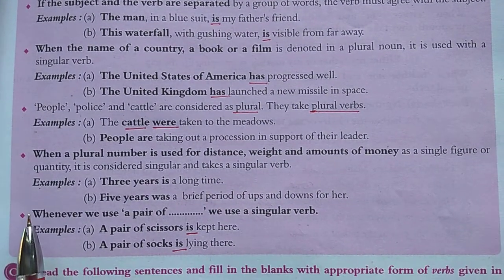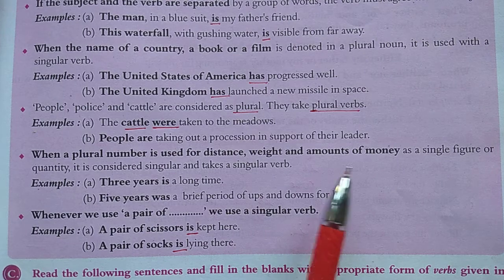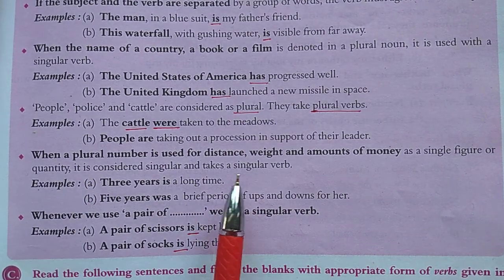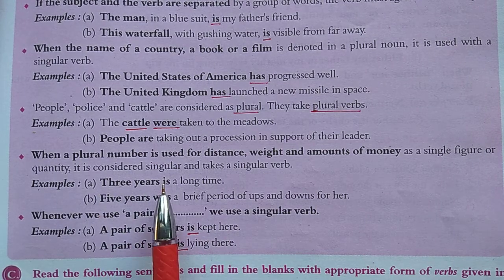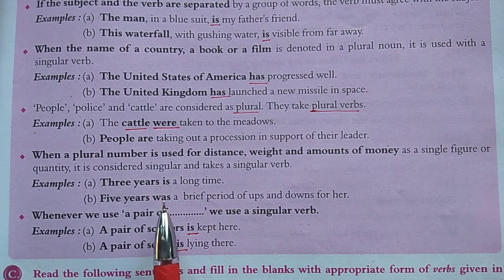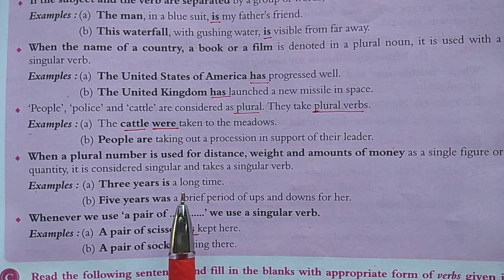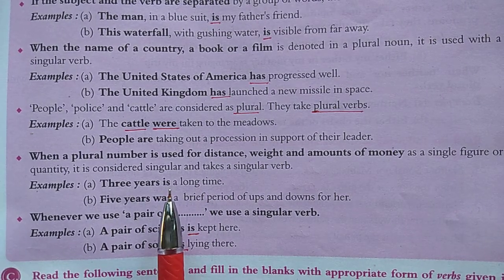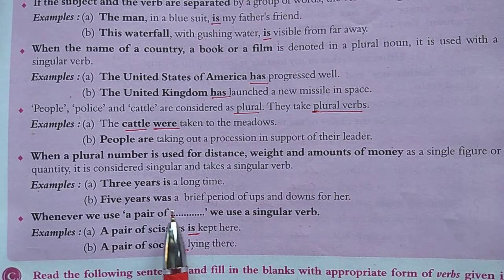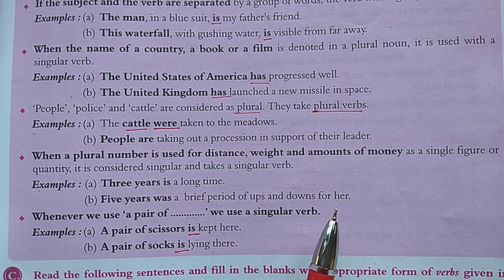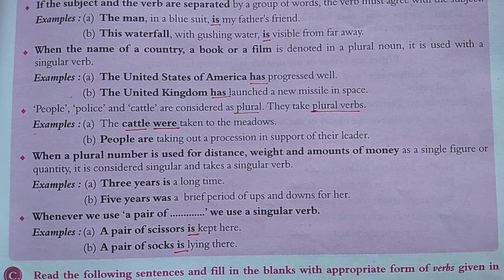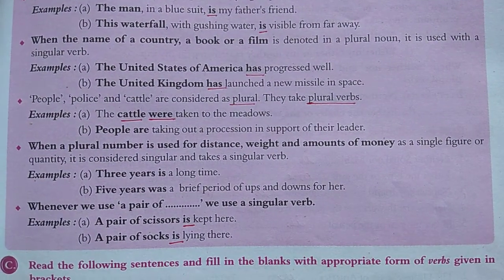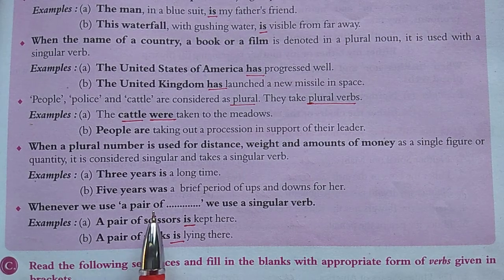When a plural number is used to denote distance, weight, or an amount of money as a single figure or quantity, it is considered singular and takes a singular verb. For example, 'Three years is...' — we are treating it as one single unit. 'Five years was a brief period of ups and downs for her' — again, treated as one quantity, so singular verb.